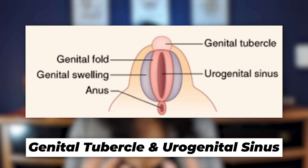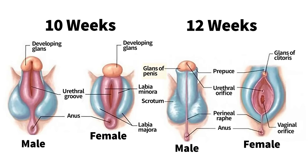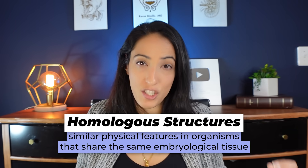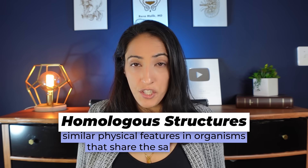At about ten weeks, the fetus starts developing male or female external genitalia depending on what genes the baby has. If they're XX they'll develop into a female, and if they're XY they'll develop into a male. The genital tubercle develops into the head of the penis in the male and the head of the clitoris in the female. Because these structures develop from the original urogenital sinus and genital tubercle — which were identical in both fetuses — they are called homologous structures, meaning they developed from the same embryological tissue with very similar function, structure, and location.